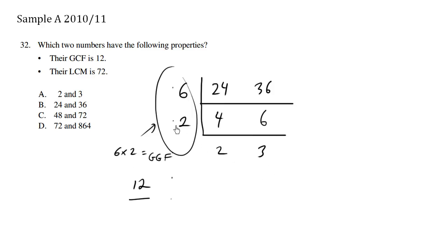And here if you multiply all the way across, 6 times 2 times 2 times 3, so 12 times 6 essentially. Twelve times 6 is 72. Six times 2 times 2 times 3 is the LCM, which equals 72.